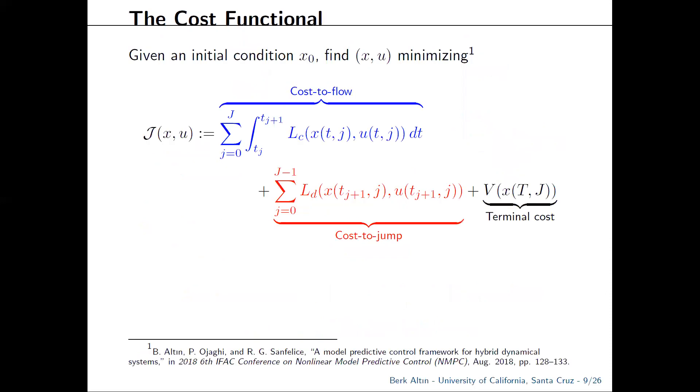The MPC framework that we have developed for hybrid equations operates by minimizing the following cost functional and applying the optimal control until the next sample. So recall the structure of solutions and their domains. Essentially, we are weighting the state and input during flows using the so-called flow cost L_C, during jumps using the jump cost L_D, and we also assign a cost to the terminal condition.